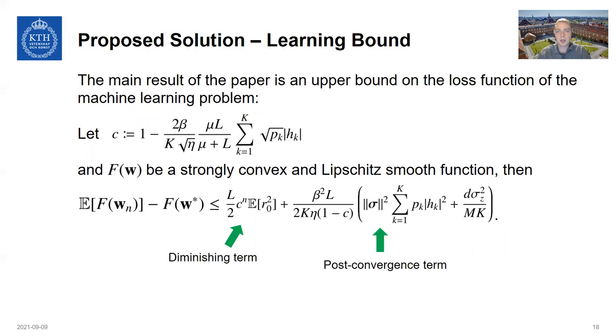And the main result of our paper is an upper bound on the loss function of this federated learning problem. In this theorem here, we can see that the upper bound is on the gap between the loss after N communication rounds compared to the optimal loss at the global minimum. And it consists of a diminishing term that is going to disappear if N gets very large and the post convergence term that remains no matter how many transmissions are employed.